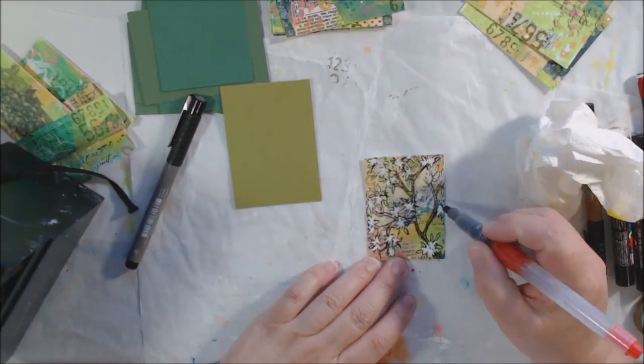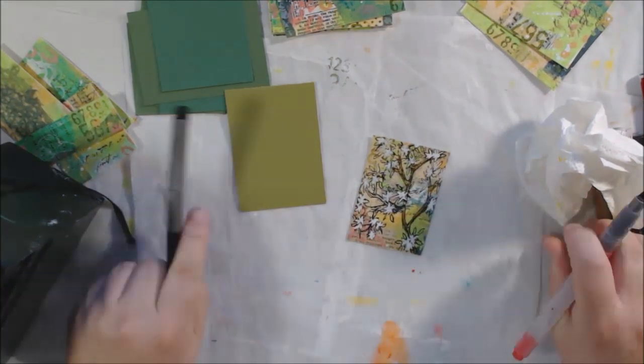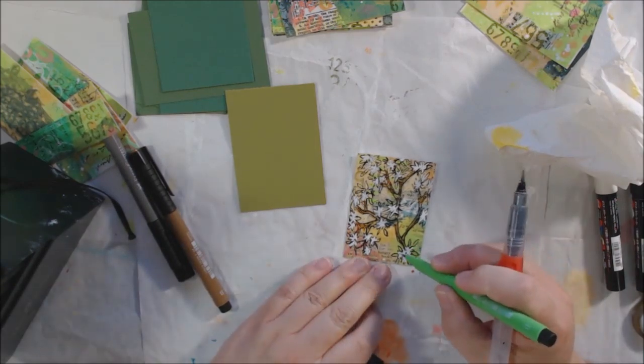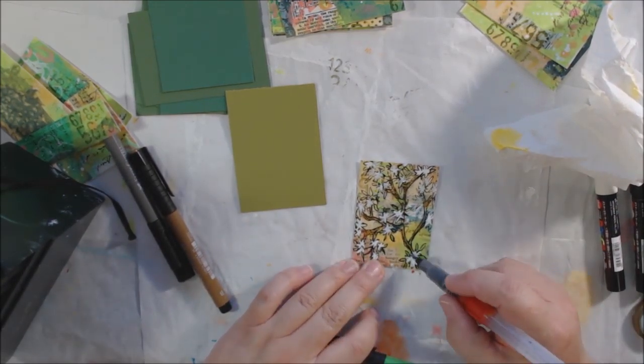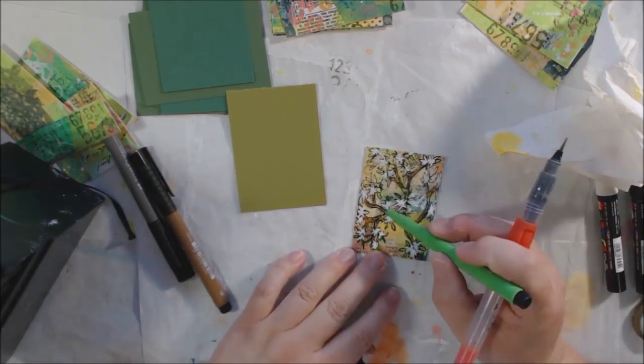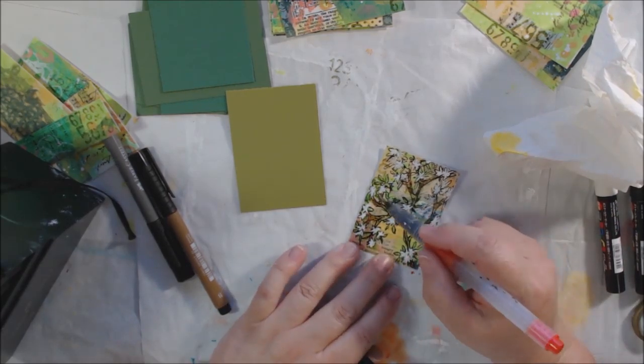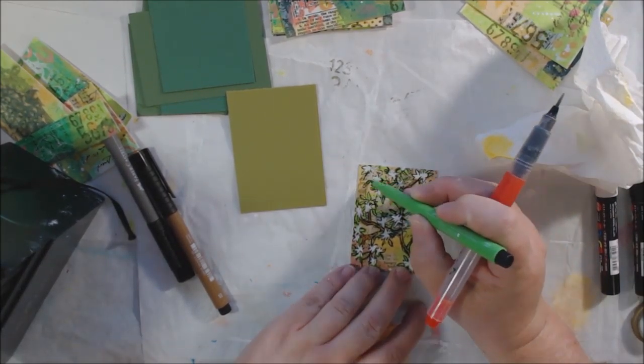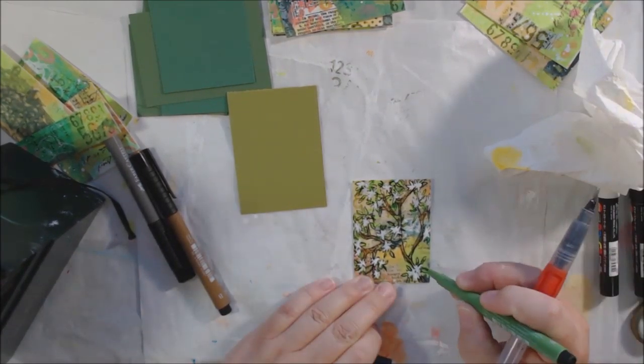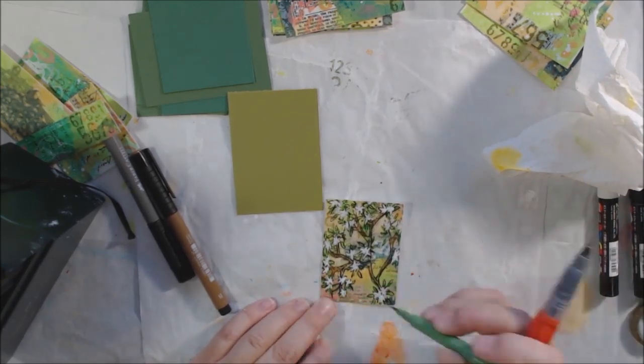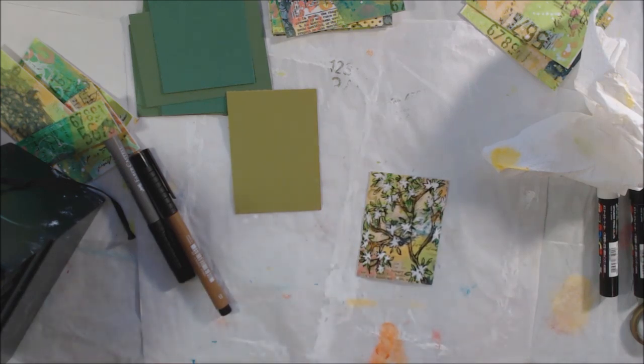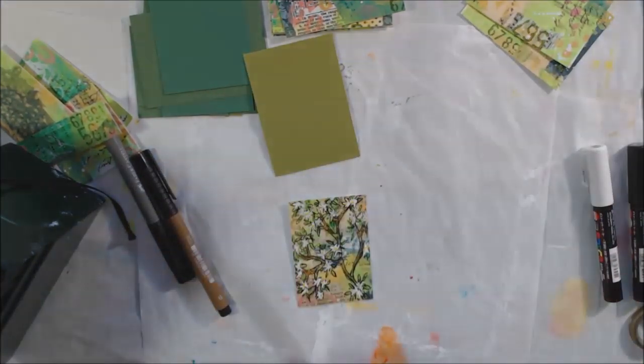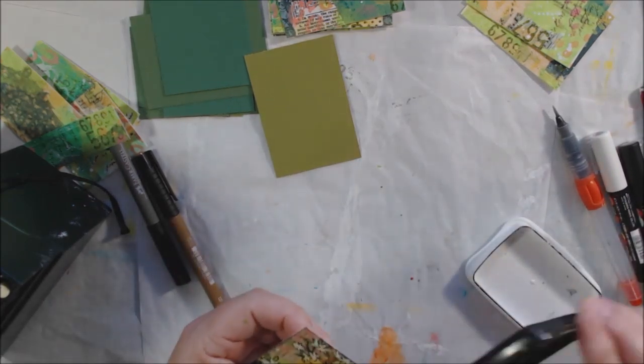Then I get the Pitt pens back out and a water brush and start adding some brown to the branches and then some different colors of green to the leaves and a little bit of yellow in the centers of the flowers just to finish out. I like to blend out my Pitt pens with water sometimes instead of just my finger. It kind of makes it look like a watercolor, but it's permanent because Faber-Castell Pitt artist pens are India ink inside them, so it's permanent ink but not a stinky kind.